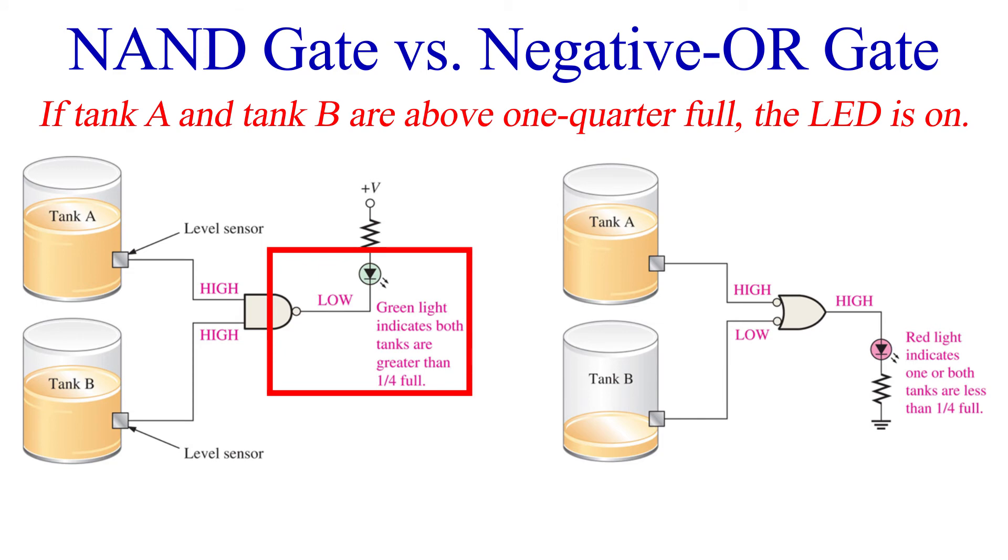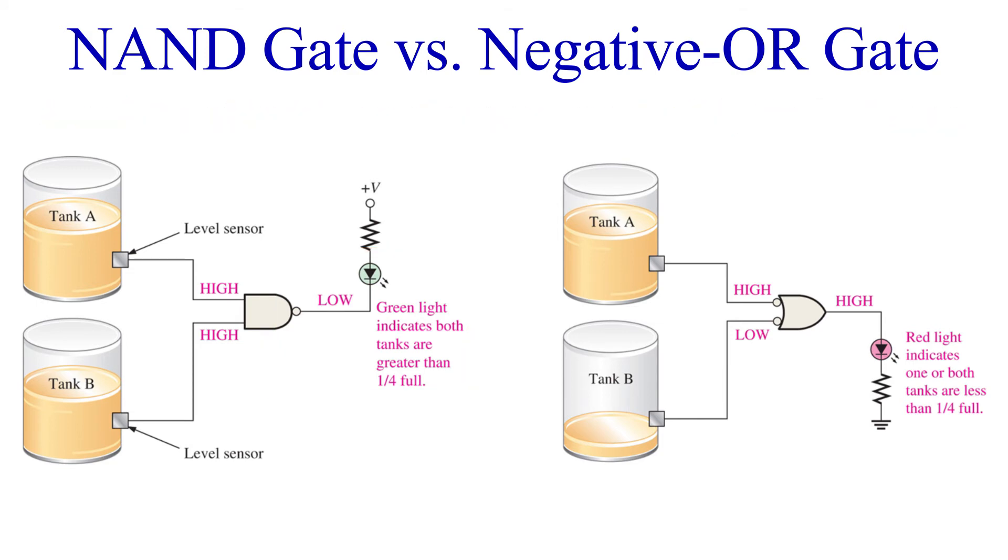Now for the red LED, we will need the negative OR gate. So as long as both tanks are above 25% full, the high output of the sensors is negated and inverted to lows before being ORed. Therefore, the output is low and the red LED is off.